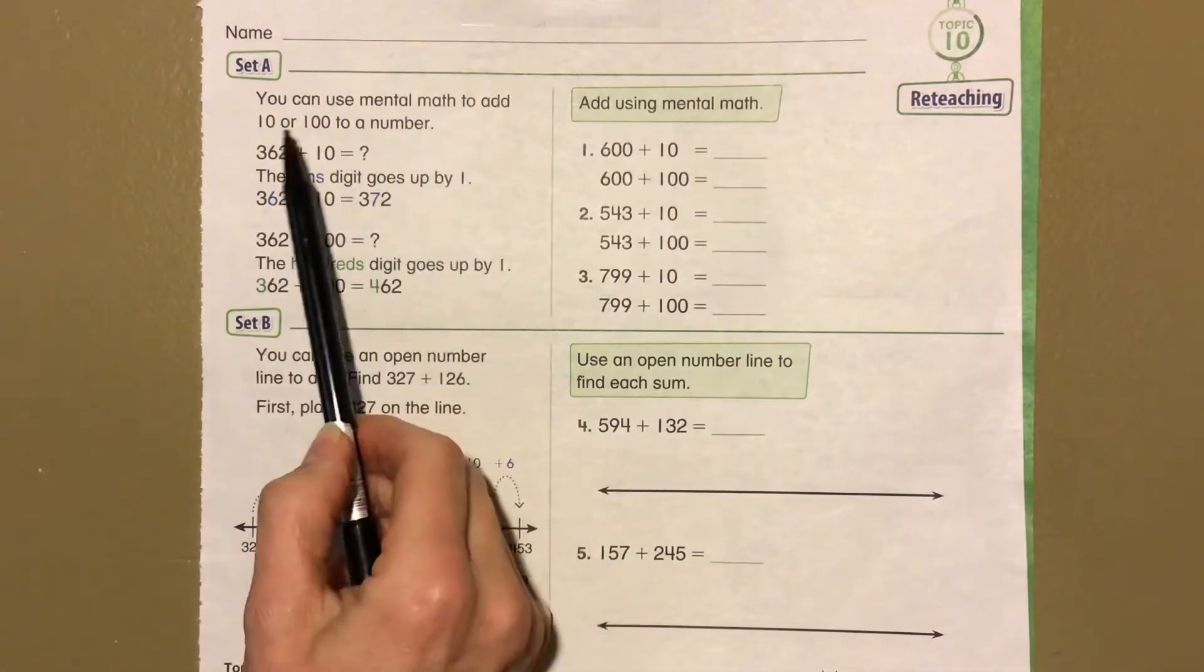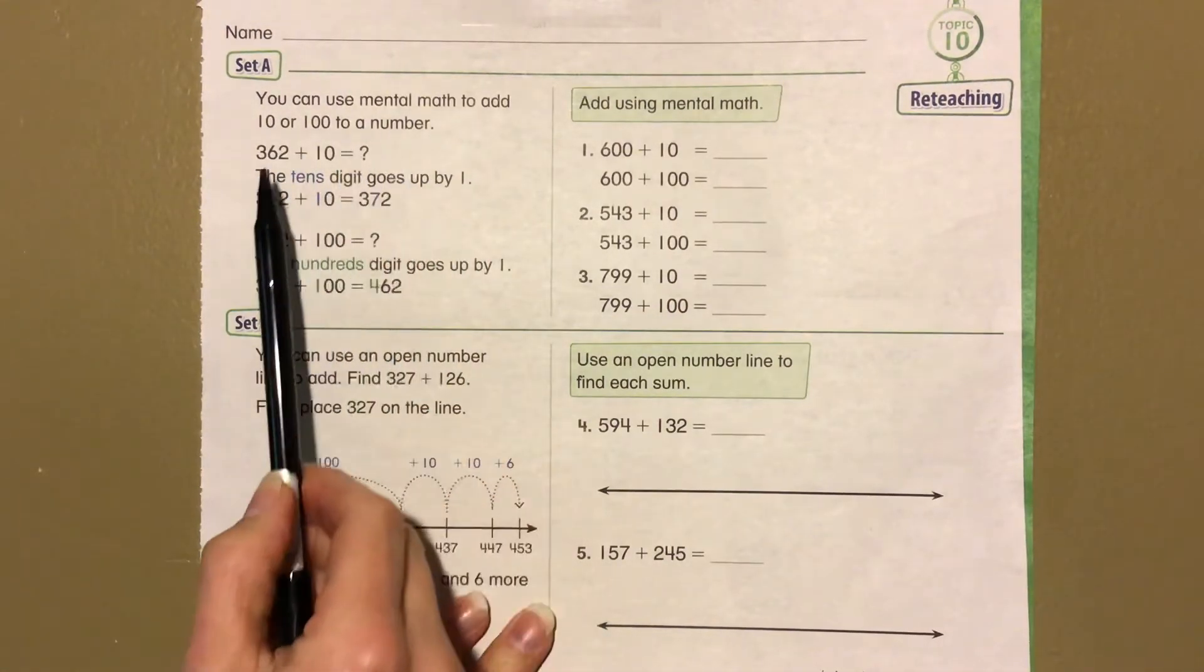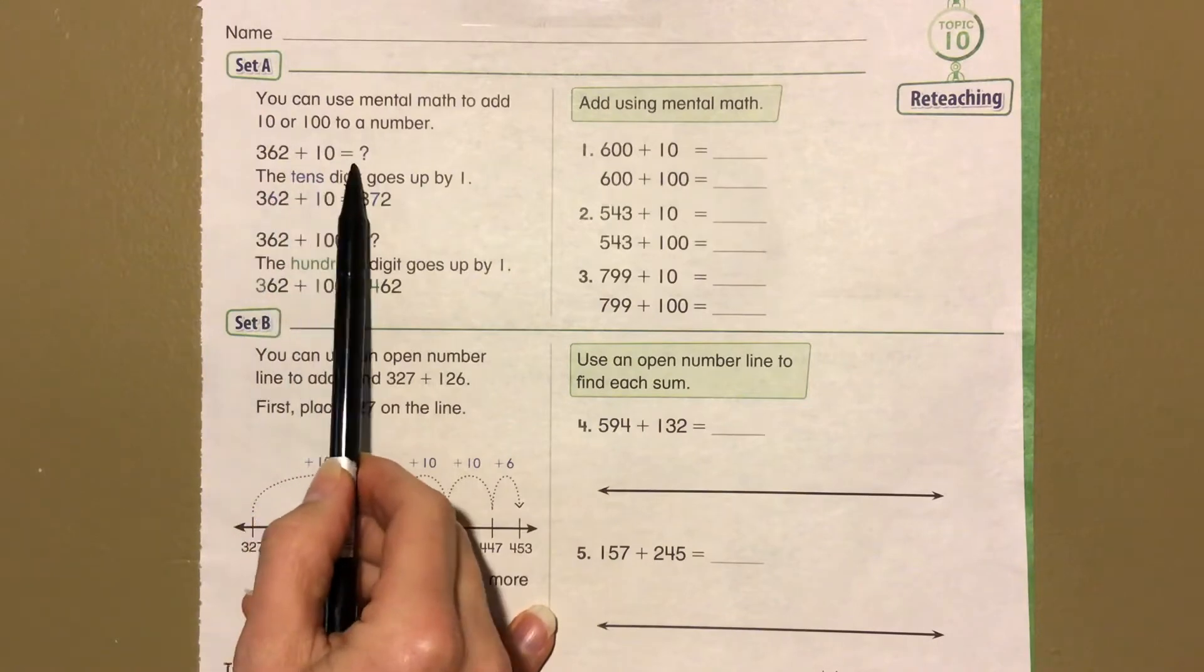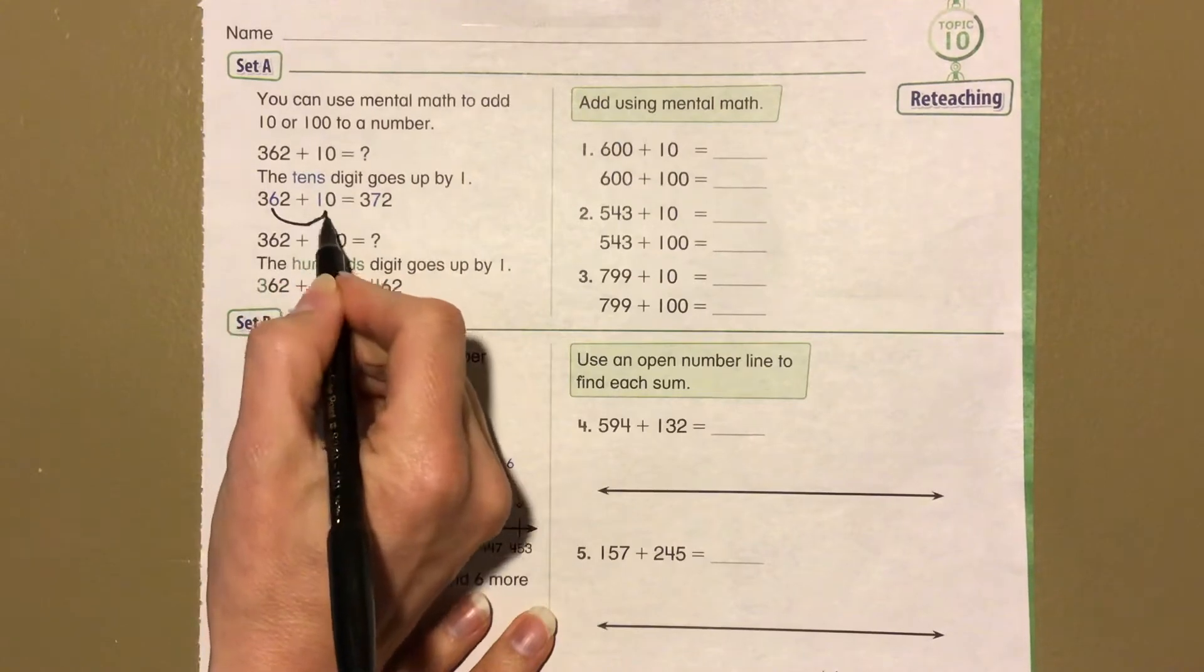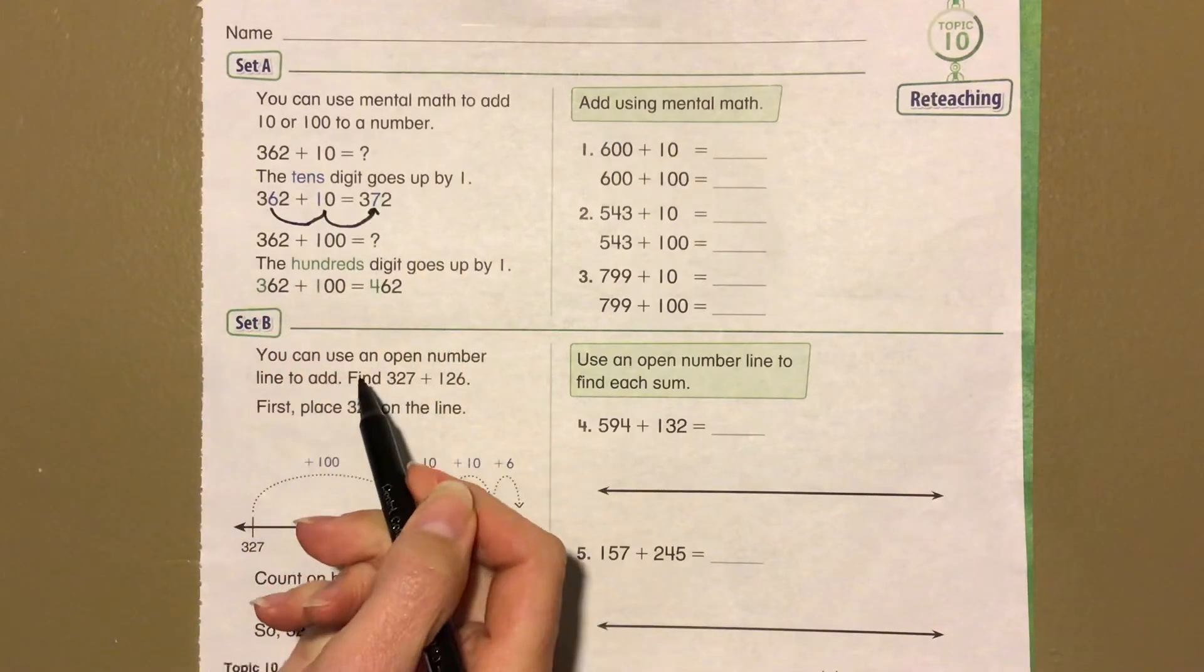You can use mental math to add 10 or 100 to a number. 362 plus 10 equals what? Well, we know that the tens digit goes up by 1, so we get 372.